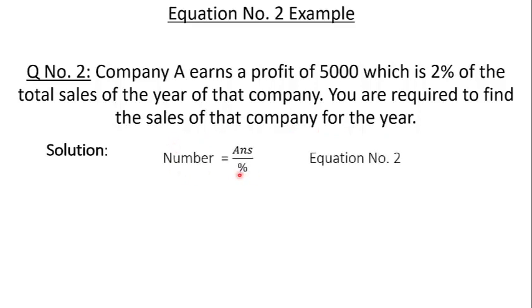In this question percentage and a number is given. Here 5,000 is 2% of sales. Using equation 2 and putting the values. 5,000 is 2% of that number. And the percentage is 2. 5,000 divided by 2% equals to 250,000 means the sales of that company for the year is 250,000.